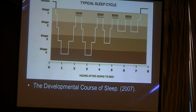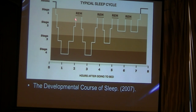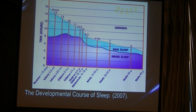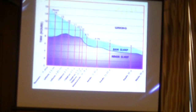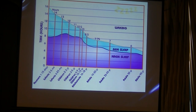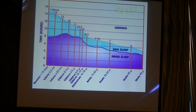The sleep cycle starts with wakefulness, then is followed by non-REM sleep through four stages, then alternating REM and non-REM sleep. REM sleep proportion is not constant across the lifespan — at the start of life, REM sleep is more prominent than at the end.